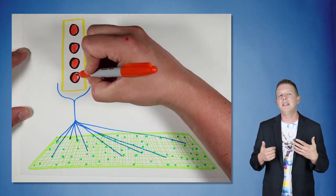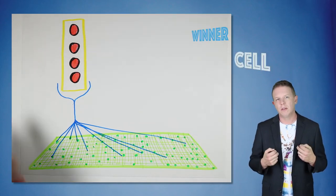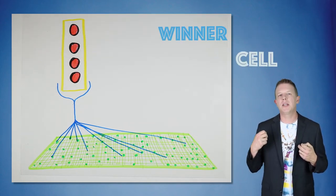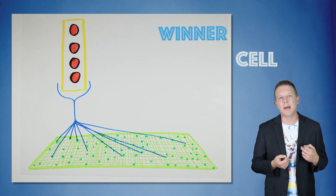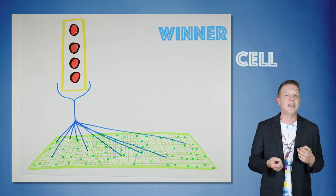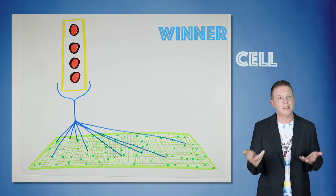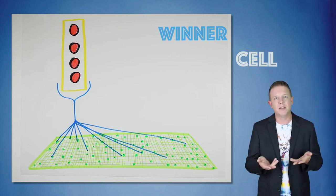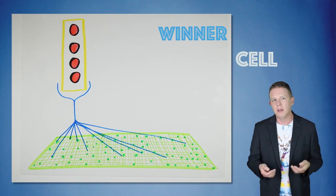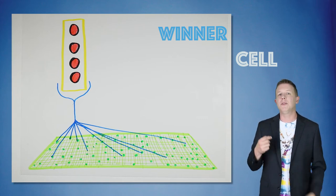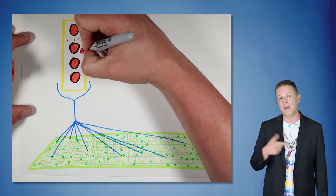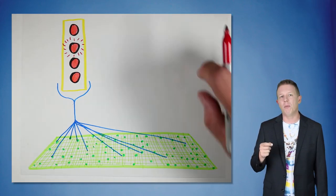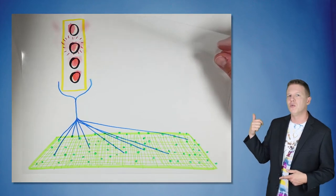Now let me introduce the idea of a winner cell. Every time a minicolumn becomes active, a winner cell is chosen to represent the latest step in the sequence. If there is a correctly predicted cell in the minicolumn, that cell is automatically the winner because it correctly predicted it would be active. However, if the column is bursting, we still need to choose a winner cell to represent this new pattern. I'm going to explain how the selection is made in a moment, but for now let's just choose one.